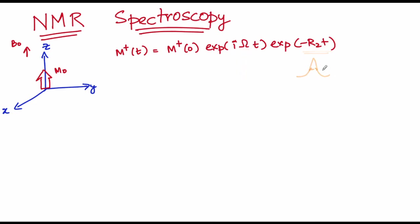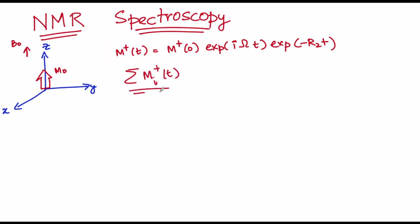And if you have multiple spins that are NMR active, then you get just a summation of different signals as a function of time. Basically, this is what is called the free induction decay.